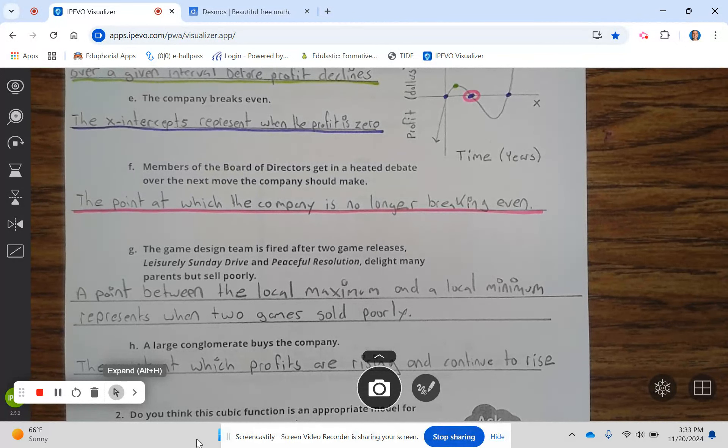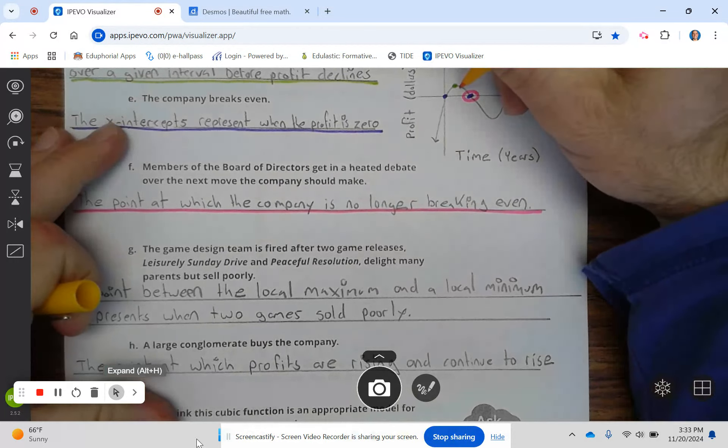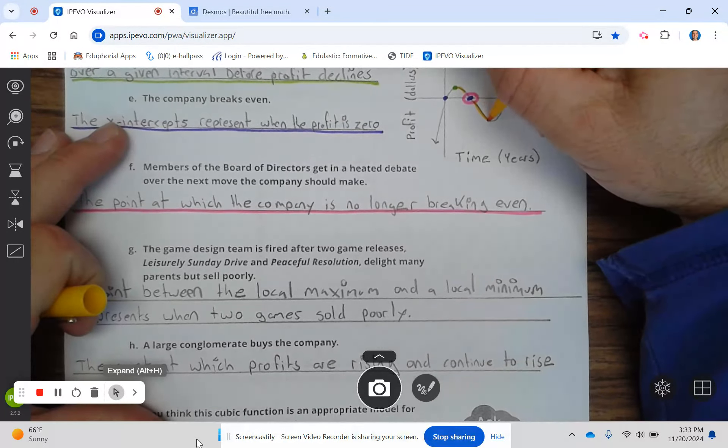G. The game design team is fired after the two-game release, Leisure Sunday Drive and Peaceful Resolution, delight many parents but sell poorly. A point between the local maximum and the local minimum represents when the two games sold poorly. So that's this region right here.